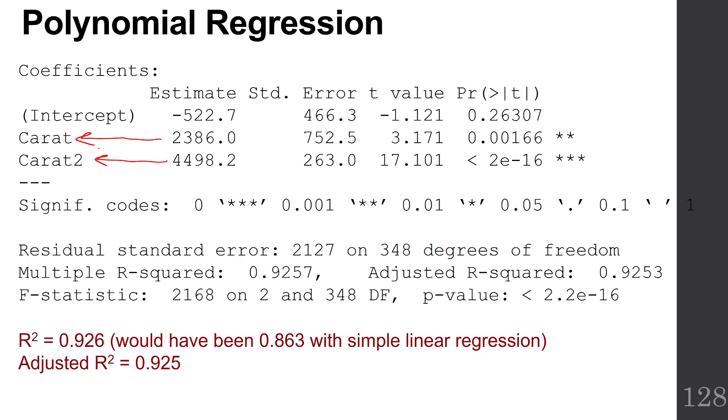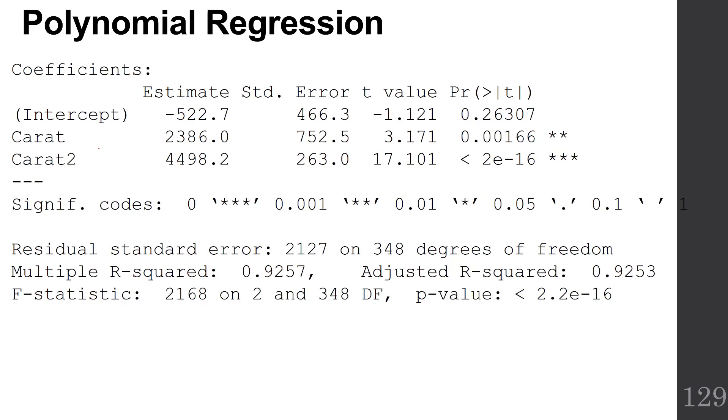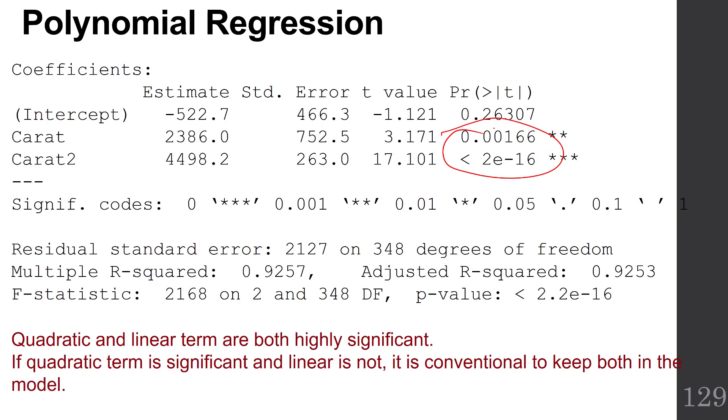Now one thing that adding this quadratic term does is it tests for a nonlinear relationship. Since our squared term is also significant, it tells us that there is a quadratic relationship. Notice the quadratic term and the linear term are both highly significant. That p-value for the squared term is a good test for whether it actually has a bend in it.